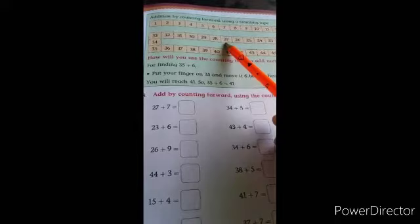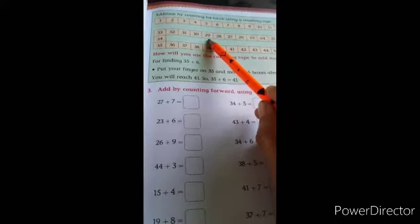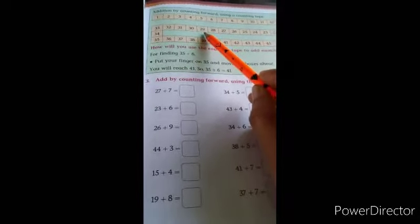Now next term, 23 plus 6. See here 23 plus 6, go front 6 boxes: 1, 2, 3, 4, 5, 6. So answer become here 29. Like that way children, you have to complete workbook page number 37. Children, you try to solve this page. Now children, next page.